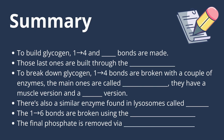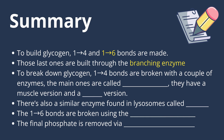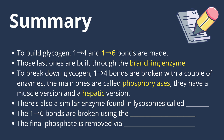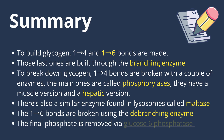To sum up: to build glycogen, we make two types of bonds — 1,4 bonds and 1,6 bonds. Those last ones are built through the branching enzyme. To break glycogen, we break the 1,4 bonds with phosphorylases — one found in the muscles and another found in the liver — and a third version found in the lysosomes called maltase. We also break the 1,6 bonds with the debranching enzyme, and we remove the phosphate of glucose-6-phosphate using glucose-6-phosphatase.